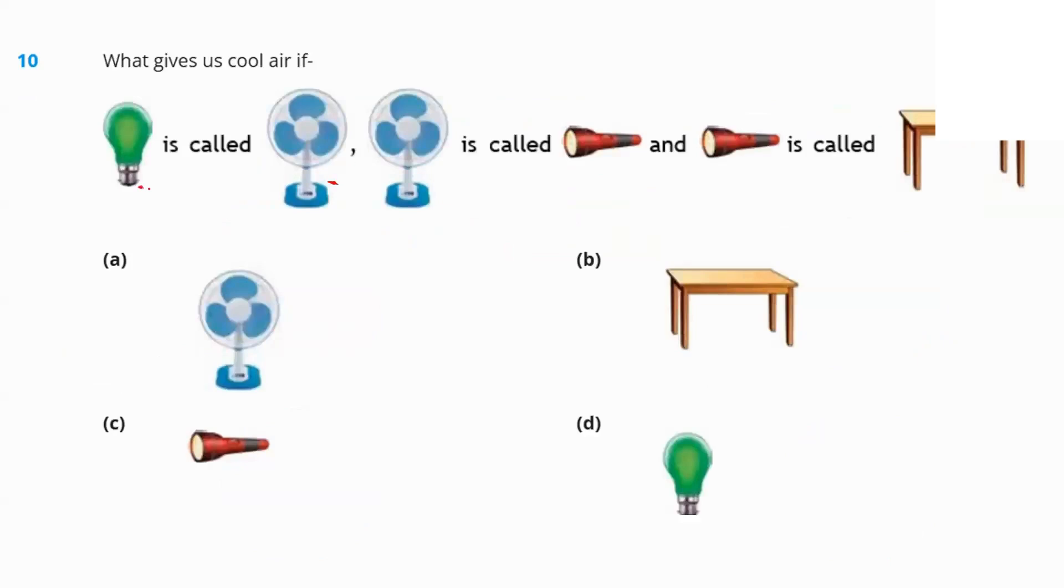Question number 10. If bulb is called fan, fan is called torch, torch is called table. What gives the cool air? The fan gives the cool air, but fan is called torch. So, option C, the torch is the answer.